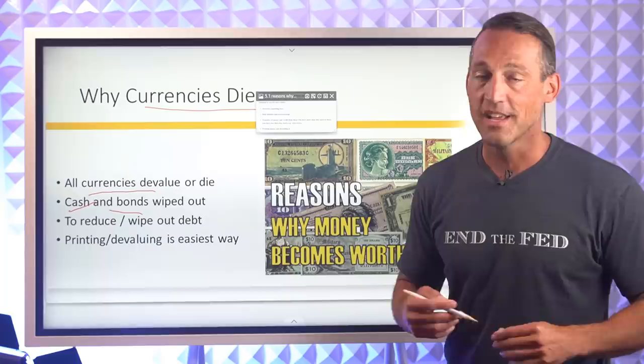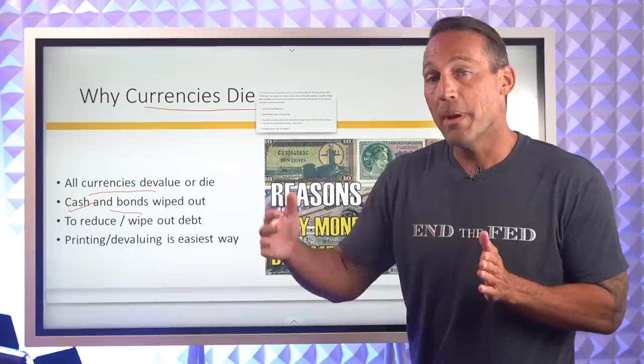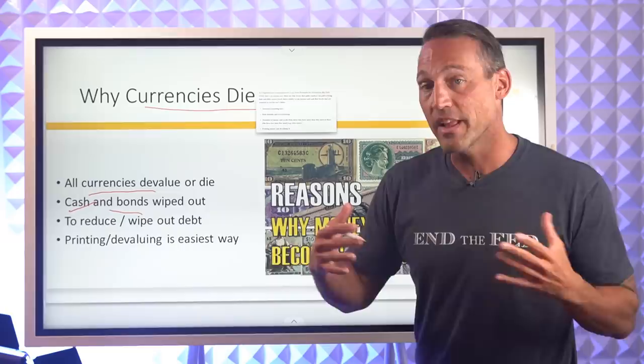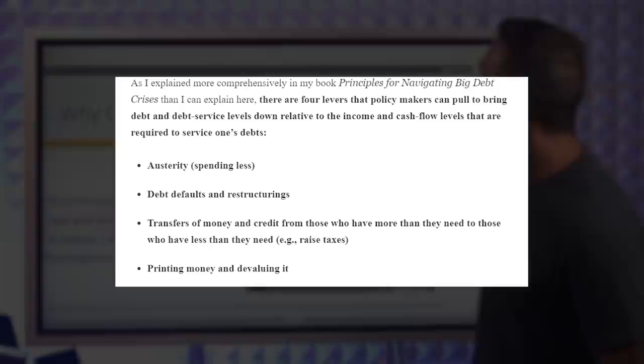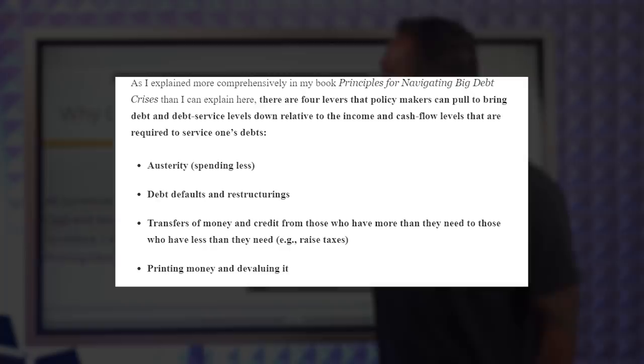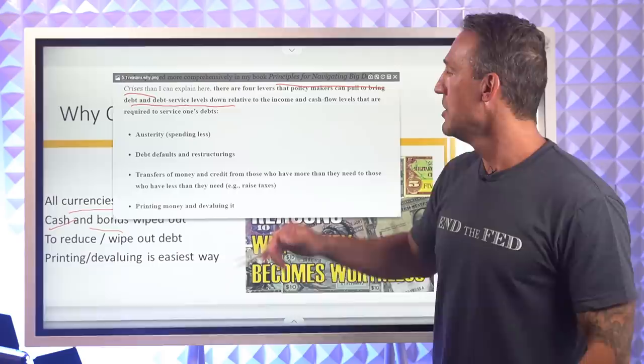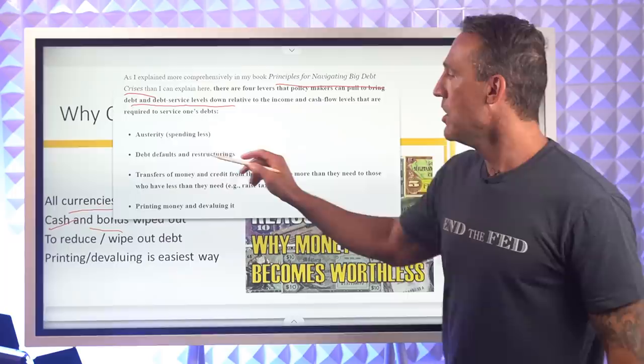The other thing we know is that this is done in order to reduce or wipe out debt. What happens is a country racks up way too much debt, and in order to try to pay it back, they will usually try to reduce it by inflating the currency or wiping it out altogether. Printing and devaluing the currency is the easiest way to do that.